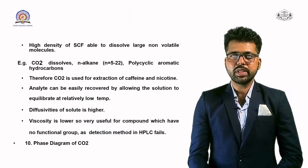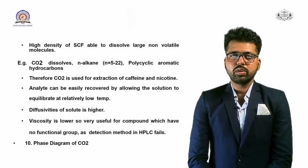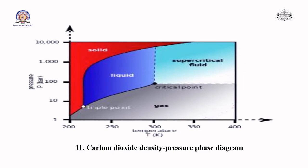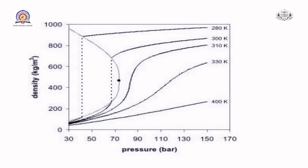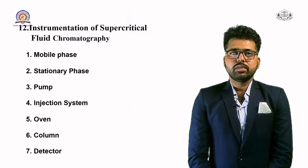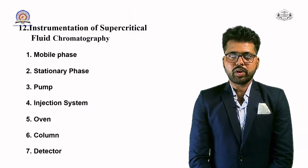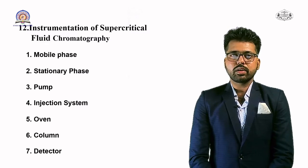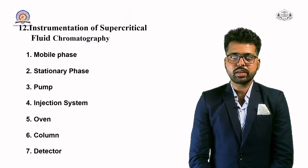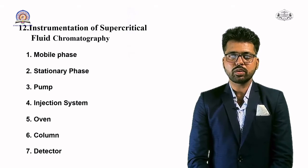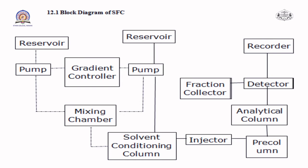These are the advantages of CO₂, which is why CO₂ is used as a supercritical fluid. The carbon dioxide density-pressure phase diagram shows the triple point and critical point of CO₂. Instrumentation of SFC includes mobile phase, stationary phase, pump, injection system, oven, column, and detector — shown in the block diagram of SFC chromatography.